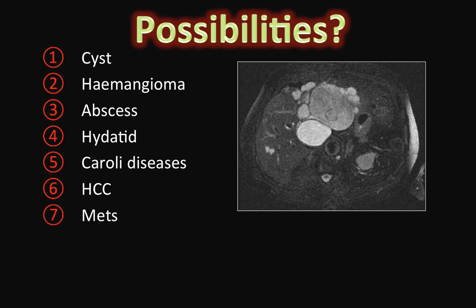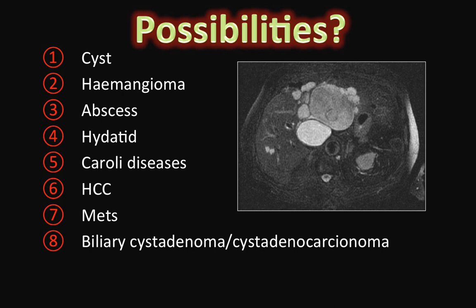Metastases may appear cystic. In such cases, you would like to know if the patient has a primary malignancy. Biliary cyst adenoma or biliary cyst adenocarcinoma may appear unilocular or multilocular as well, with or without thick enhancing rims, thick septations, or internal nodular soft tissue components that enhance. Calcifications are also described. Trauma or estrogenic causes may lead to seroma, hematoma, or biloma.